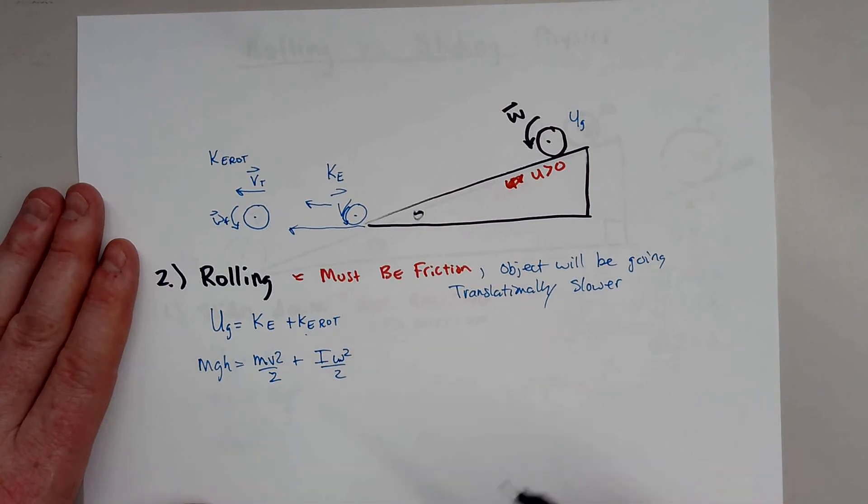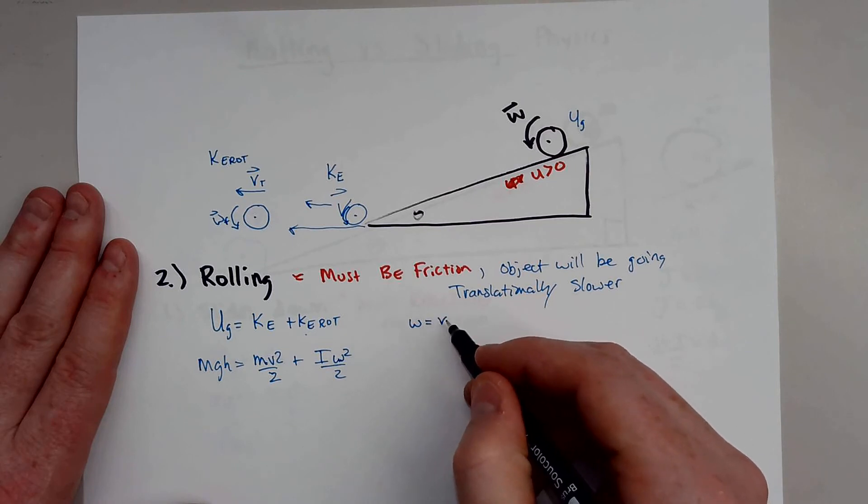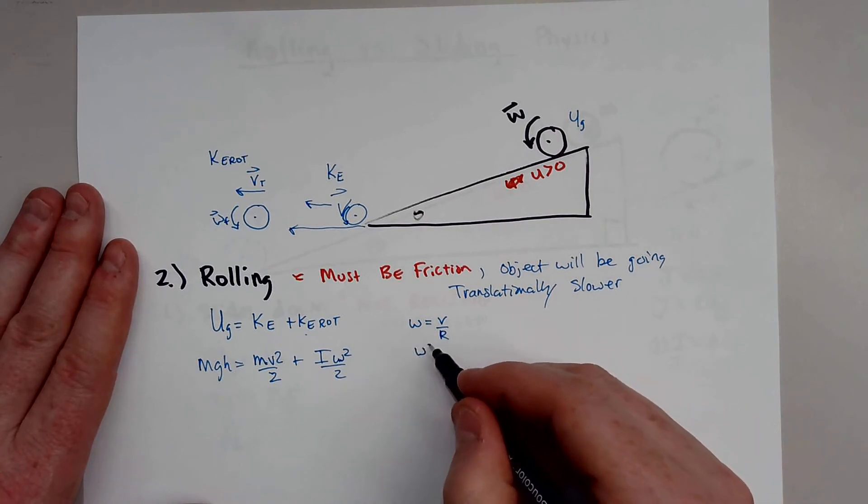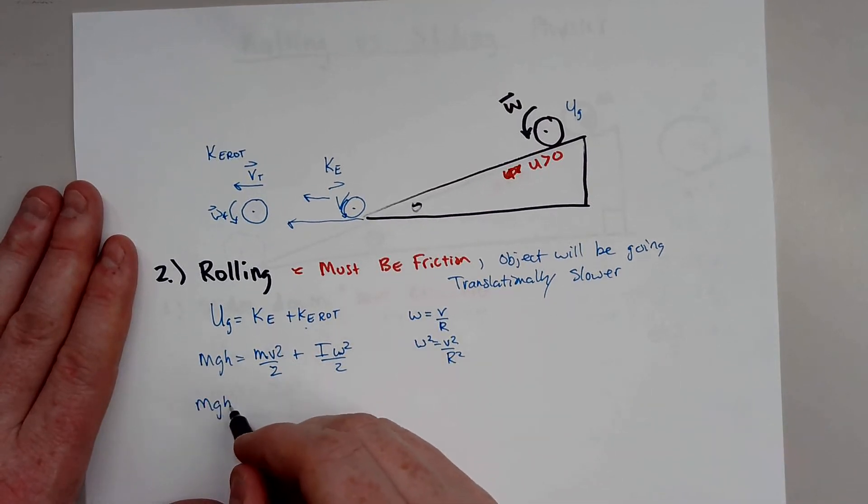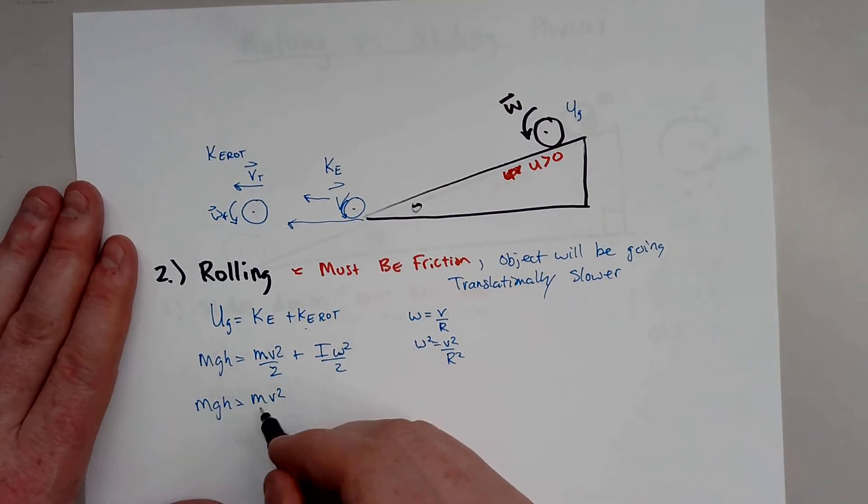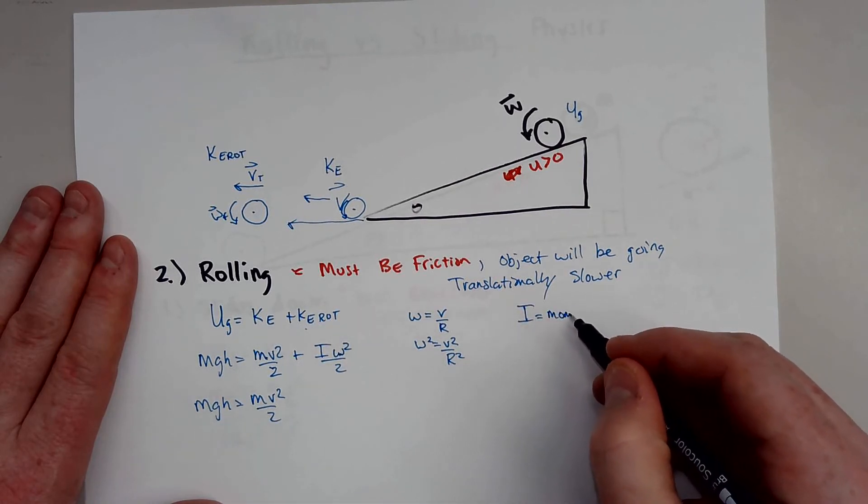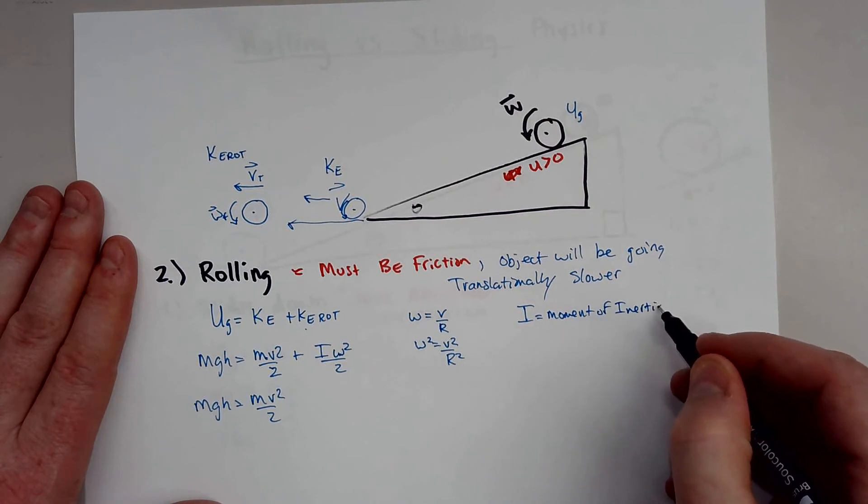So actually how you would have to relate this is omega is actually equal to velocity over r, so some radius over r. So omega squared is just v squared over r squared. So you'd have to plug this in right here. And remember, i is moment of inertia.